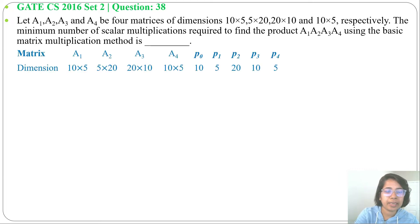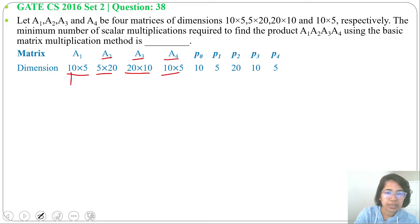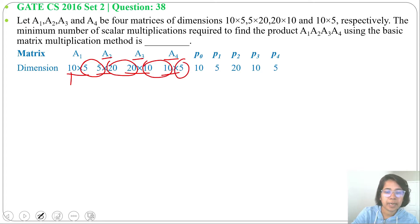The four matrices have dimensions: A1 is 10×5, A2 is 5×20, A3 is 20×10, and A4 is 10×5. So p0=10, p1=5, p2=20, p3=10, and p4=5.